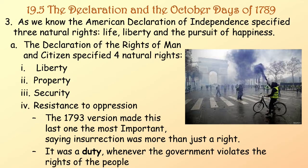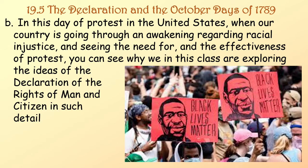The American Declaration of Independence specified three natural rights: life, liberty, and the pursuit of happiness. The Declaration of the Rights of Man and Citizen specified four natural rights: liberty, property, security, and resistance to oppression. The 1793 version of the Declaration made this last one the most important, saying that insurrection was more than just a right — it was a duty whenever the government violates the rights of the people. In this day of protest in the United States, you can see why we're exploring the ideas of the Declaration of the Rights of Man and Citizen in such detail.